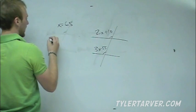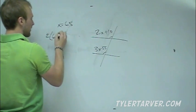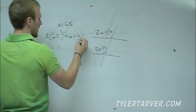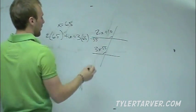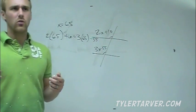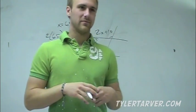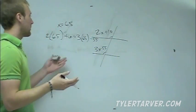So, we plug it in. 2 times 65 plus 10 equals 3 times 65 minus 55. Now, if two things are equal, you just set them equal to each other. So, we set them equal to each other and we're working.